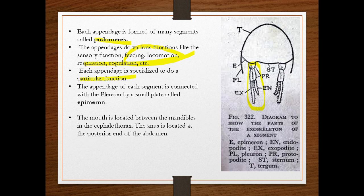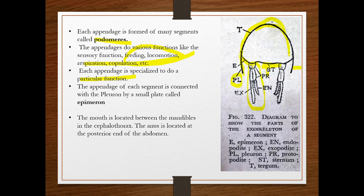Each appendage has a particular function. The appendages of each segment are connected to the pleuron by a small plate called the epimere. The dorsal shield is called the tergon and the ventral piece is the sternum. The lateral extension downward is called the pleuron, and the connecting plate between the appendage and the pleuron is the epimere.